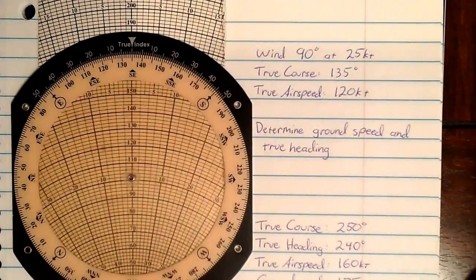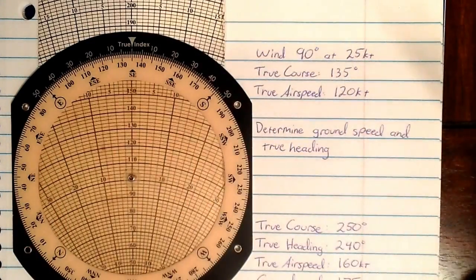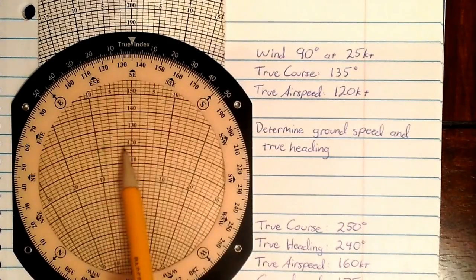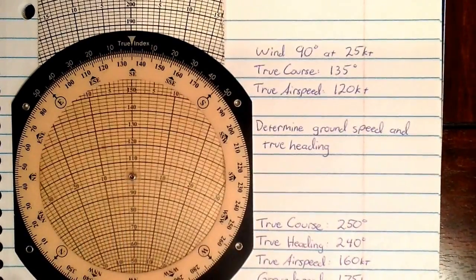Now we're configured in airplane mode. So what is the card telling us? Well, first of all, it's telling us our wind correction angle, which in this case is 2, 4, 6, 8 degrees to the left, which would result in a heading of 135 minus 8 or 127 degrees.